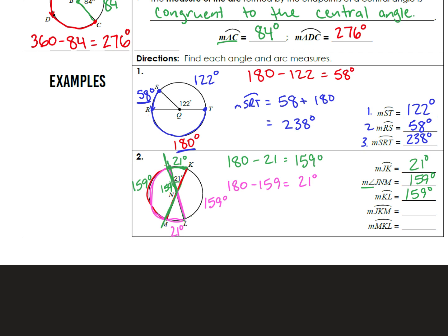For arc JKM, we start at J, go through K, and end at M - the long way. This arc covers three parts: 21, 159, and 21. So the measure of arc JKM equals 21 plus 159 plus 21, which is 201 degrees.